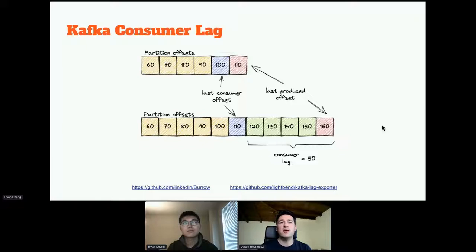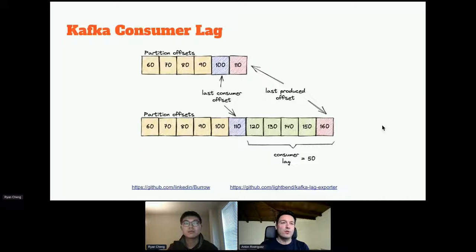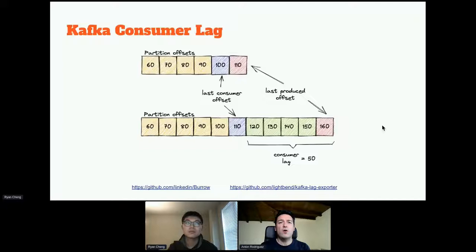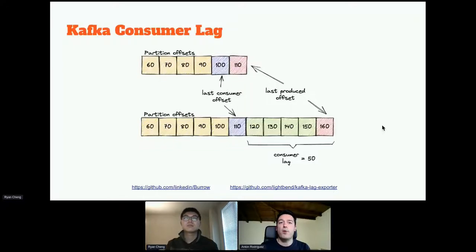There is one metric we haven't mentioned yet that is fundamental: consumer lag. Consumer lag tells us how much data is pending to be consumed by a particular consumer group. If there is no difference between the latest data produced and the latest data consumed, we are good — there is no consumer lag. But if there is a difference, there is consumer lag. This can happen for different reasons: problems in the consumer, the broker, or even the producer producing more data than expected. Consumer lag is an excellent indicator of problems and is the main metric we use for alerting.